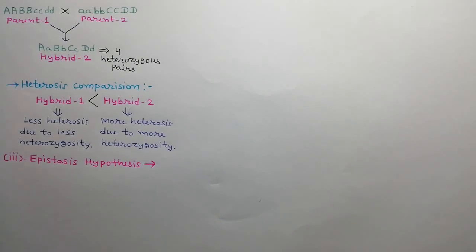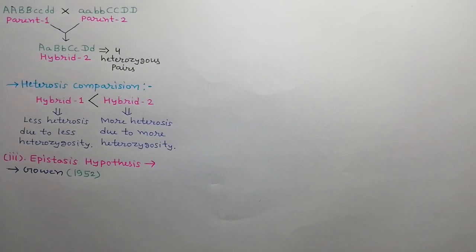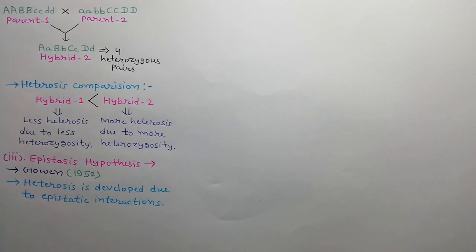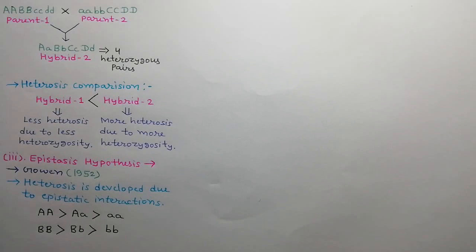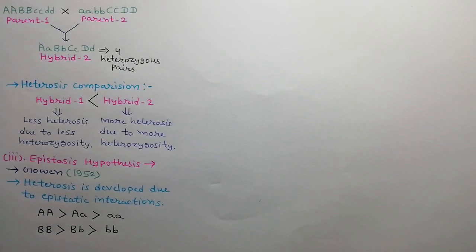Next is the Epistasis Hypothesis. This hypothesis was given by Govan in 1952. According to this hypothesis, heterozygosity is developed due to favorable epistatic interactions between non-allelic genes. For example, A is dominant over a, and A is dominant over a. Similarly, B is dominant over b, and B is dominant over b.